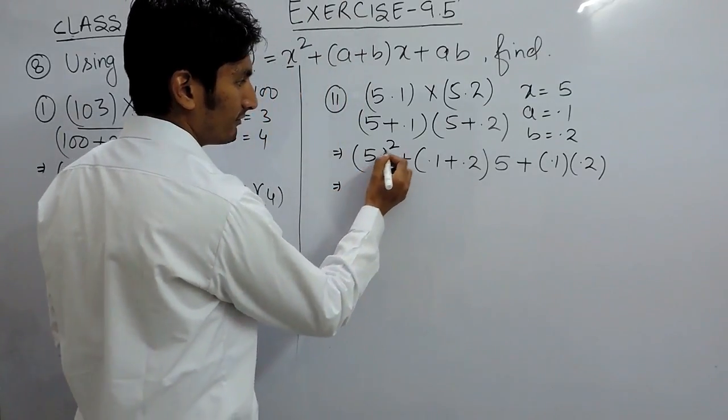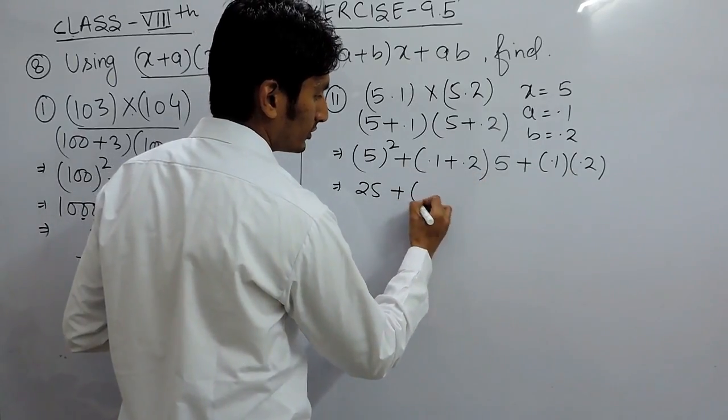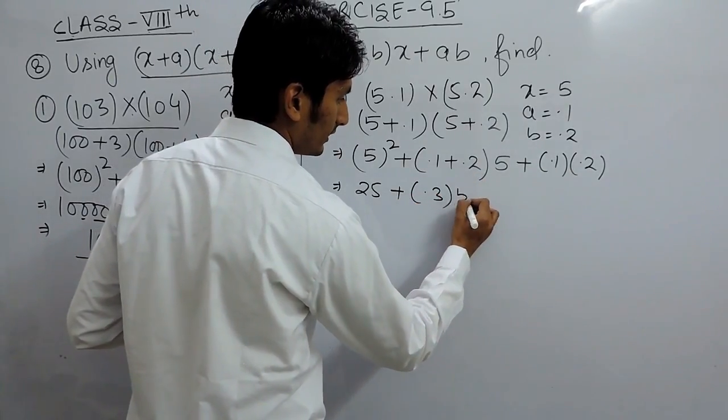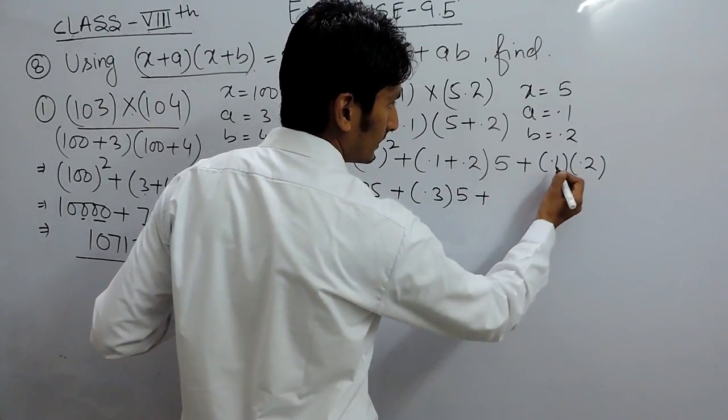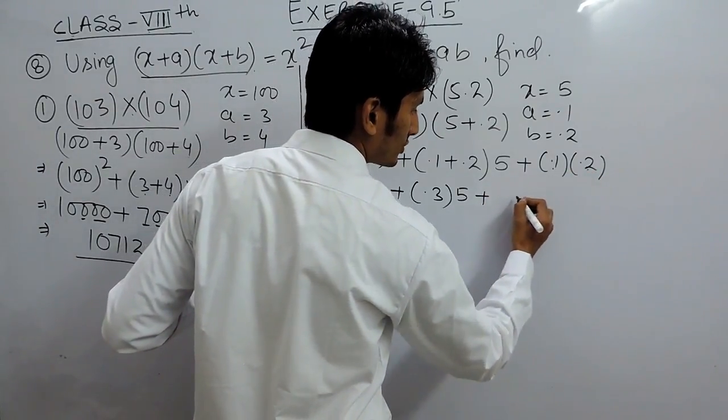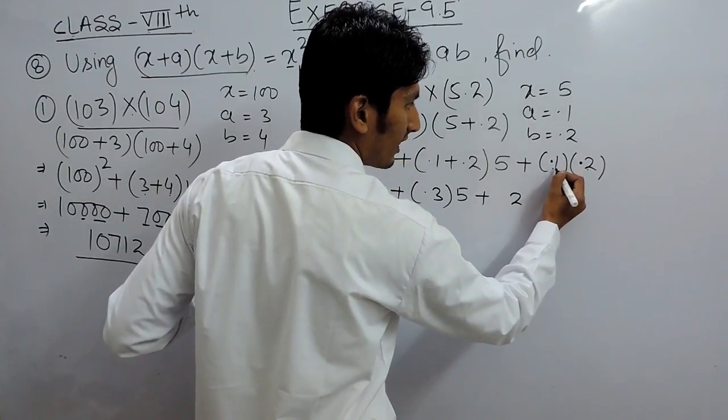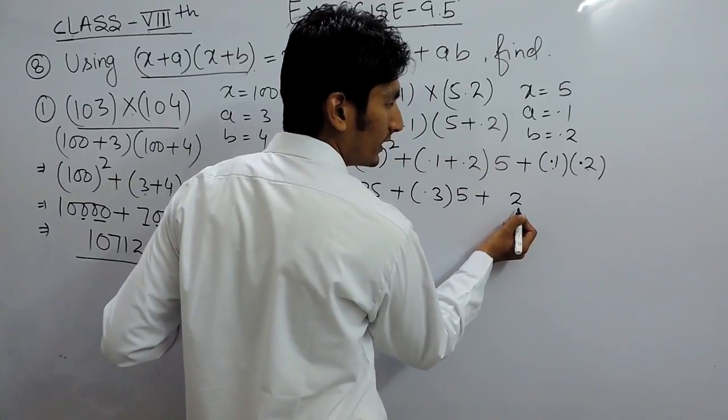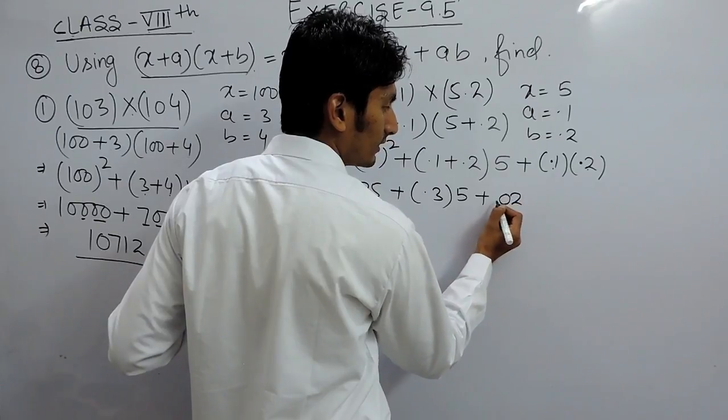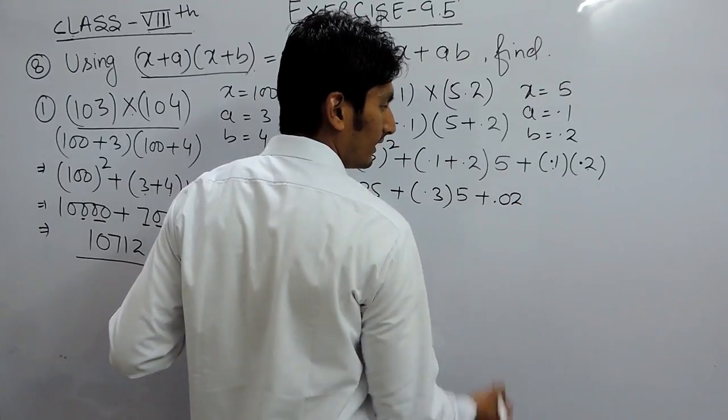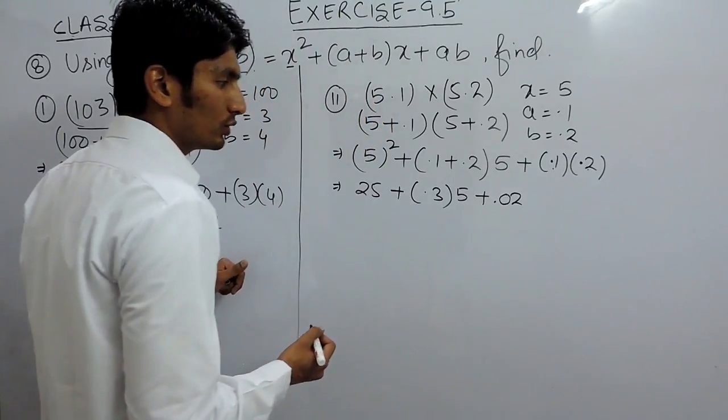Solving this, 5 squared should be 25 and this is 0.2, 0.1 should be 0.3 into 5 and plus this should be 2 into 1 is 2 and because there are two decimals or you can say two digits after the decimal. So, I have to put decimal after counting 2 from the right. So, if there is no number, so we can adjust it as 0. So, this will become 0.02.